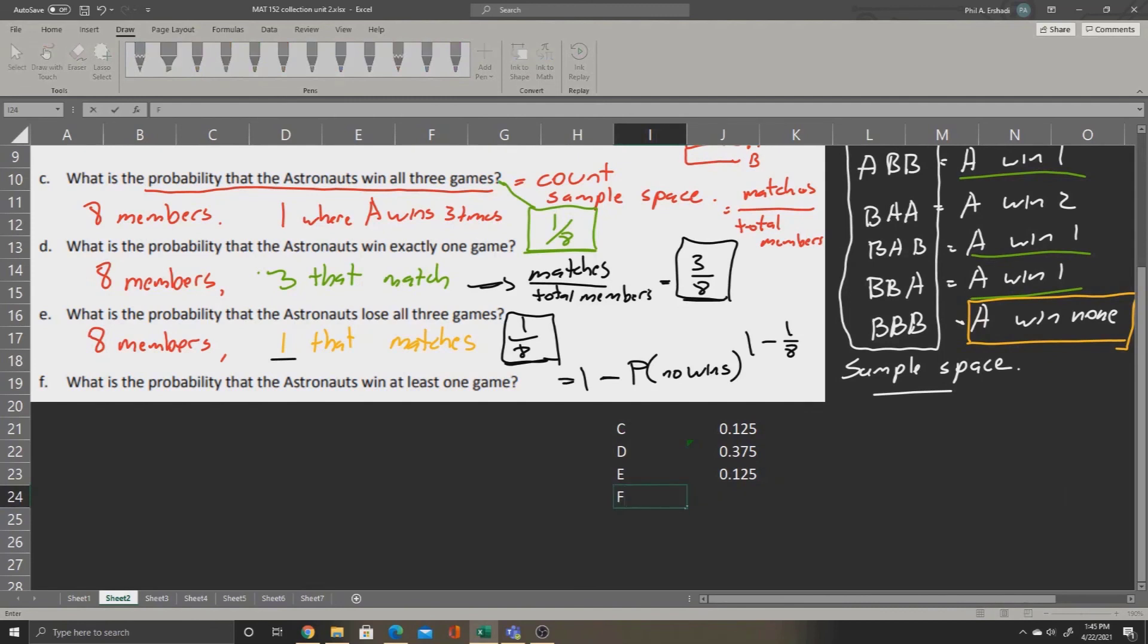And for part F, we'll have equals one subtract one over eight. You can enter all this in the same line in Excel, and Excel will know how to handle it. We press enter, and we get point eight seven five. These will be our probabilities for parts C through F.